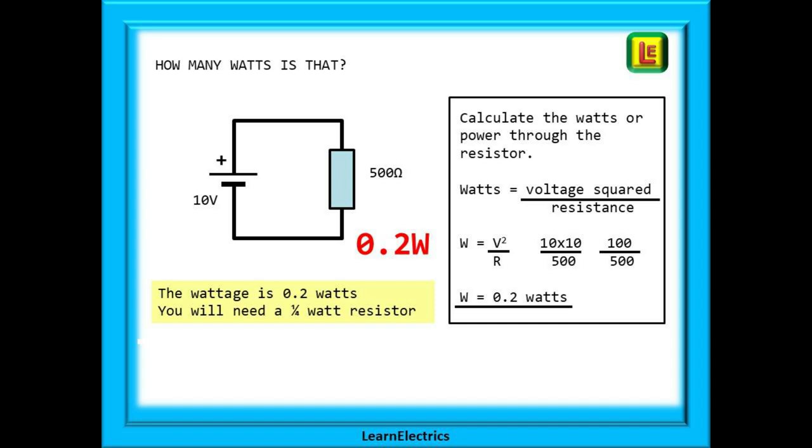To calculate the watts we use the formula V squared divided by R. The voltage squared divided by the resistance, and we already have that information. V squared is simply the voltage multiplied by itself, so 10 volts times 10 volts is 100, and 100 divided by the resistance of 500 ohms is 0.2 watts. Our resistor must have a power rating of at least 0.2 watts otherwise it may burn out. We would choose a quarter watt resistor for this job and this is a standard wattage.